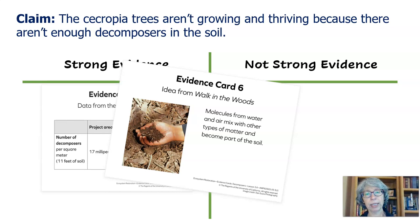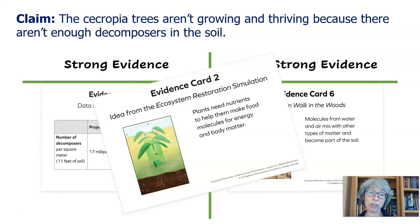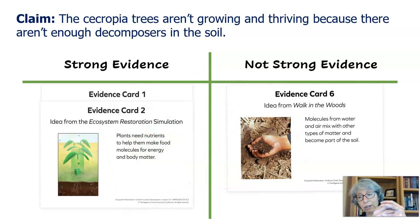The next card — card two — comes from the book Walk in the Woods: molecules from water and air mix with other types of matter and become part of the soil. This information is important, but is it helping us explain that there are not enough decomposers in the soil? It might not be, so we'll put it over here. Card three is from the ecosystem restoration simulation: plants need nutrients to help them make food molecules for energy and body matter. We're looking at whether plants aren't growing and thriving because there aren't enough decomposers in the soil — and we know plants need those nutrients. So this might help us link ideas together; let's put it here for now.